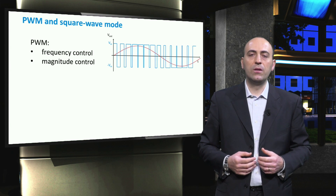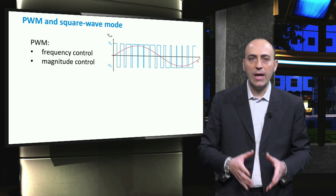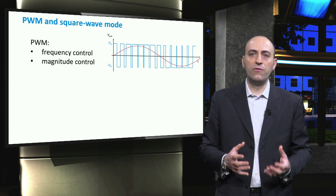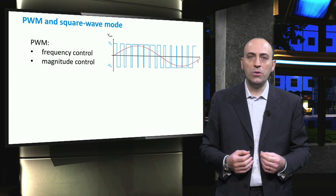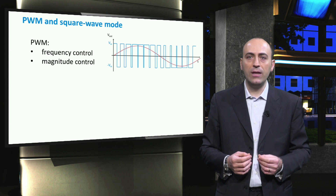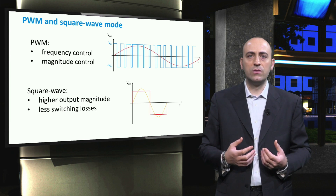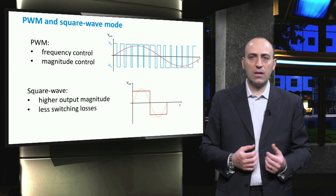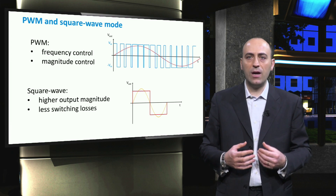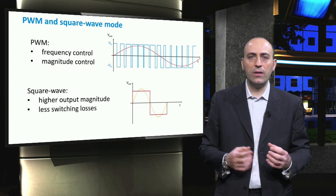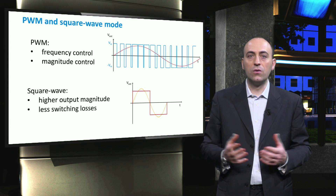Let's now see the main differences between the PWM linear mode and the square wave mode. In the linear mode, PWM allows us to have both frequency control and magnitude control. Frequency control is obtained by changing the frequency of the control signal. Magnitude control can be performed by changing the amplitude modulation ratio, which is the ratio between the amplitude of the control sine signal and the height of the sawtooth signal. The square wave mode, on the other hand, gives a higher output magnitude since the control signal amplitude is much larger than the reference signal amplitude. This makes the peak amplitude of the first harmonic of the output voltage around 4 over pi times the input voltage. Also, the switches are turned on and off only once per period, reducing the switching losses. One negative aspect of this mode is that the output wave amplitude is not controllable anymore.